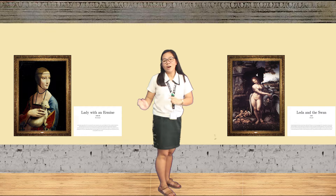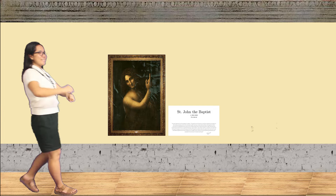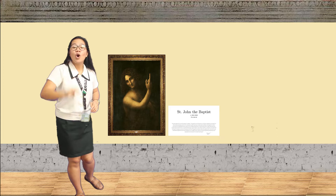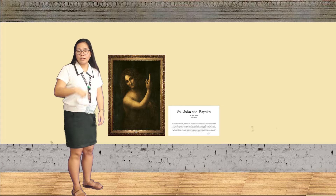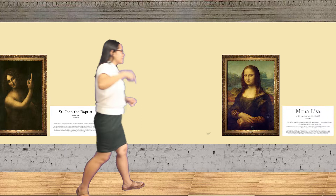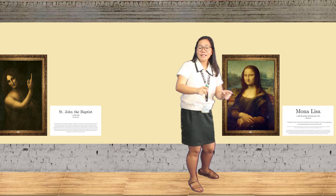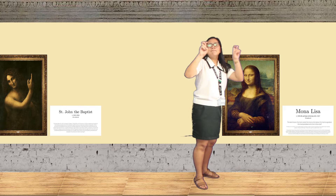The next painting is St. John the Baptist, made on oil on walnut wood. The picture depicts St. John the Baptist in isolation. The figure appears to emerge from a shadowy background. The next painting is Mona Lisa, made in oil on poplar panel. Mona Lisa is the most well-known and most famous painting in the world.